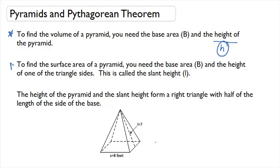To find the surface area of a pyramid, remember that we needed the height of one of the triangle sides, which we called the slant height or L.